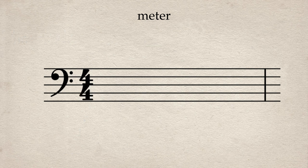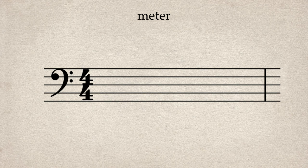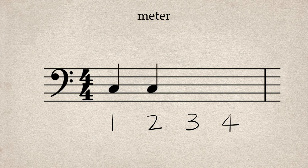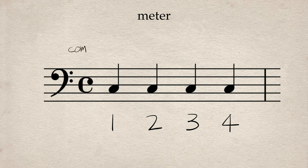Let's look at a couple of examples. The four four is the most often used time signature. It means that there are four beats in the measure, and the quarter note gets the beat. Because the four four time signature is so common, we sometimes write a C to show that it's in common time.